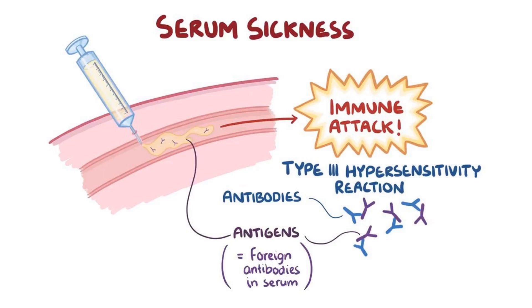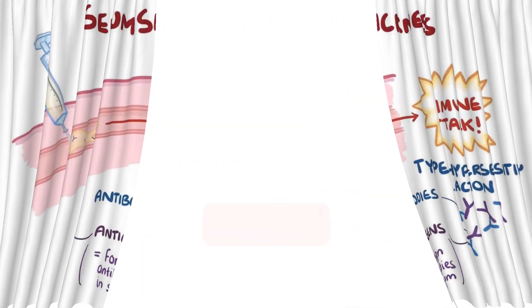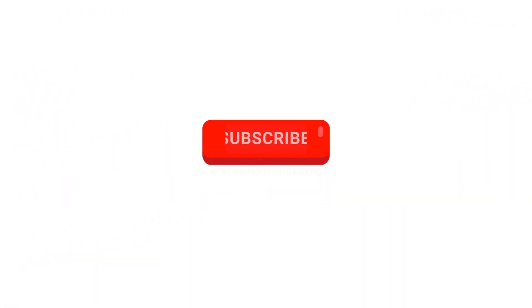After a 5-day course of intravenous glucocorticoids, the patient's symptoms had resolved. Horse antithymocyte globulin was added to the patient's list of drug allergies and not to be used again. Subscribe to my channel for more interesting cases.